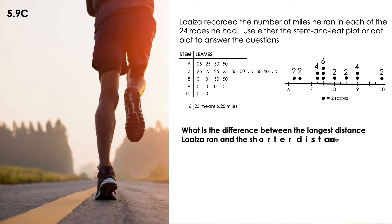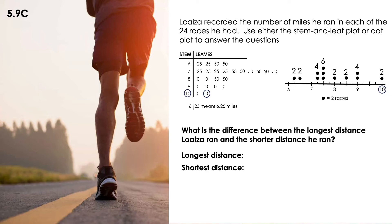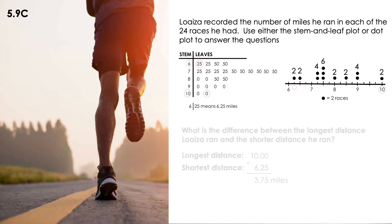What is the difference between the longest distance Loaiza ran and the shortest distance Loaiza ran? The longest and shortest were already noted: the longest is 10 and the shortest is 6.25. So we subtract, and our answer is 3.75 miles — that is the difference between them.